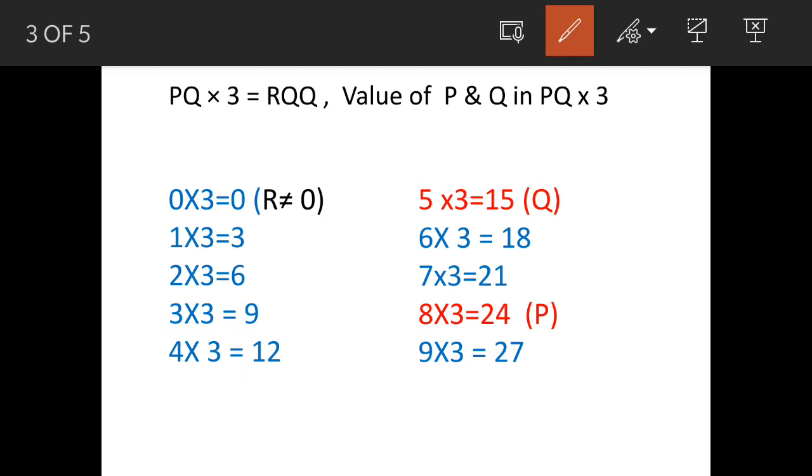Now in a similar manner we work out value of P. So what is the requirement for P? For Q we have seen that we need unit digits at both the places. Now P should be such a number that when it is multiplied by 3, when P is multiplied by 3 the result must be R which is a different number and the same number as Q.